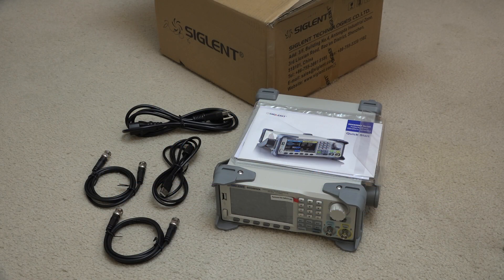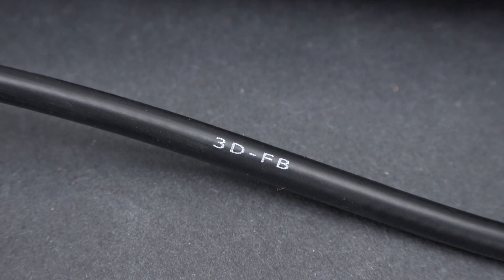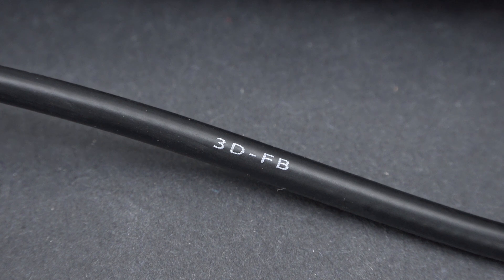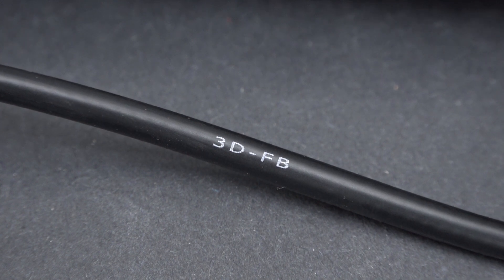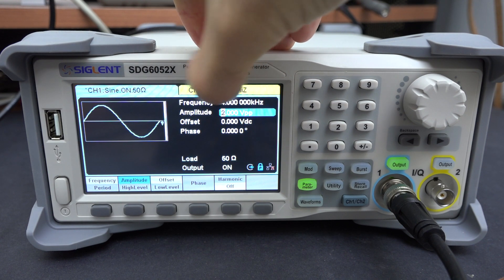Opening up the box, you get the generator, power and USB cables. There are also two BNC cables made out of 3D-FB coax, which in theory should be a little better than standard RG58. So let's power it up and take a look!